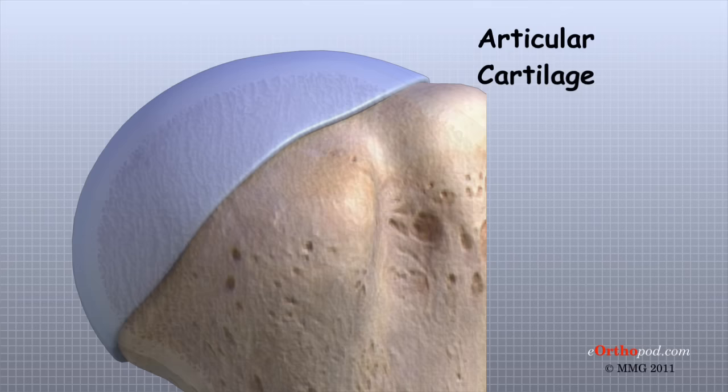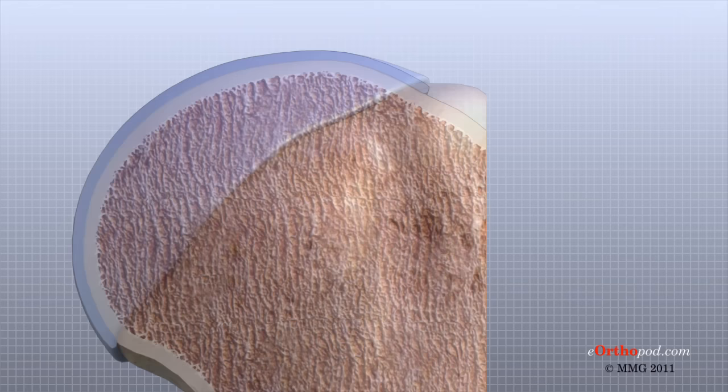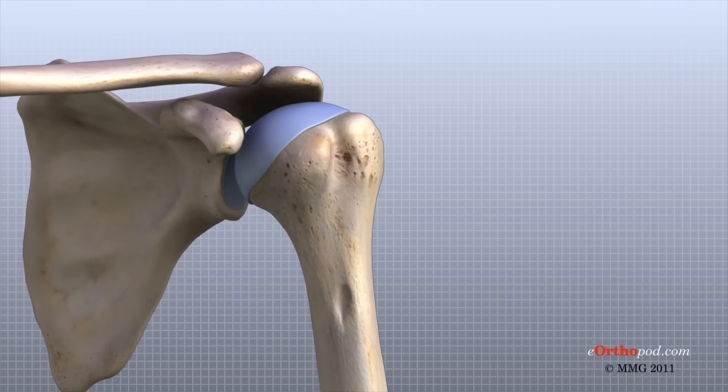Articular cartilage is the material that covers the ends of the bones of any synovial joint. Articular cartilage is about one quarter of an inch thick in most large, weight-bearing joints. It is a bit thinner in joints such as the shoulder, which don't normally support weight. Articular cartilage has a rubbery consistency. It is very slippery, which allows the joint surfaces to slide against one another with very little friction. Articular cartilage functions to absorb shock and provide an extremely smooth surface to make motion easier.